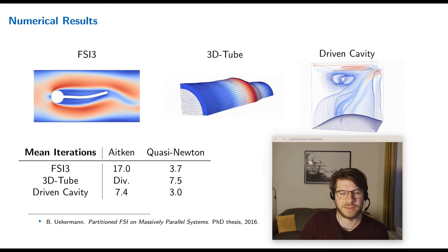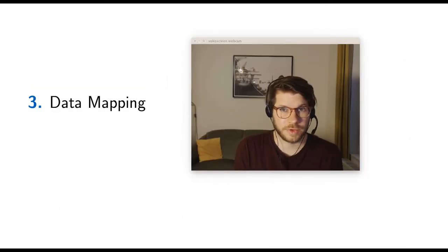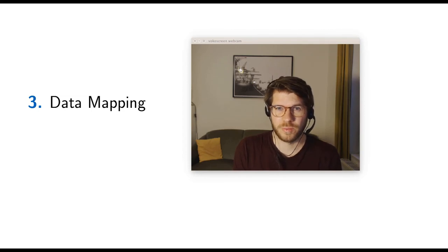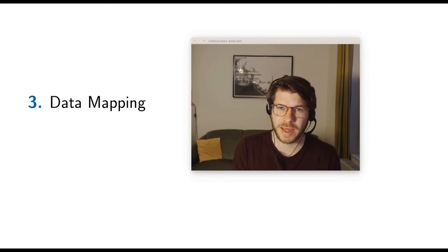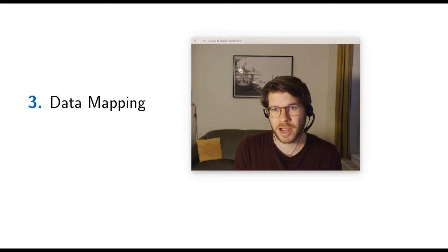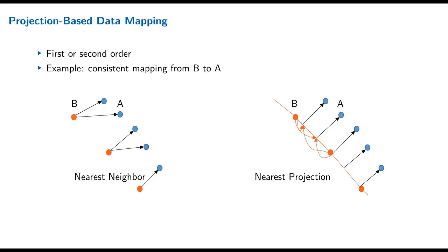That was coupling schemes. Now let's look at data mapping. To recall: we assume the two solvers use different spatial discretizations — different meshes — and normally this means different meshes at the coupling interface. Data mapping provides methods to bring data from one mesh to another at the coupling interface.